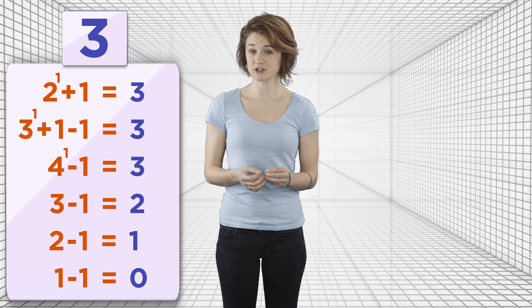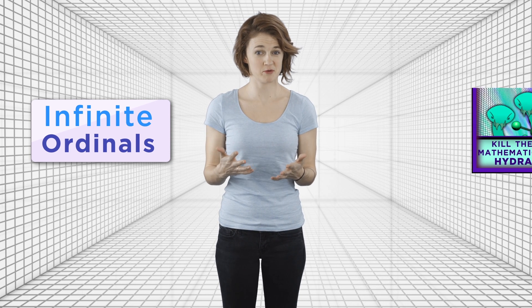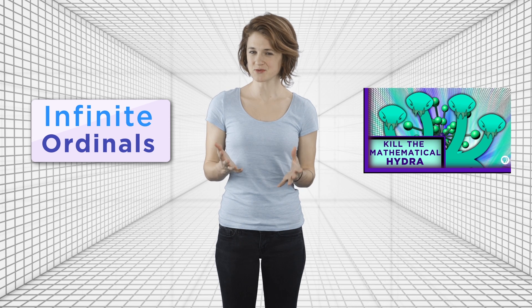If you start the Goodstein sequence with the number 3, it goes to 0 after only 6 steps. But if you start your Goodstein sequence with 4, it takes this many steps to terminate. And the situation gets worse if you start with bigger numbers. So how do we prove this eventually terminates? Infinite ordinals. You might be having a little deja vu moment. It should remind you of last week's Hydra.